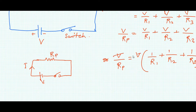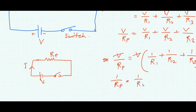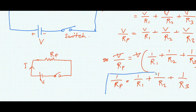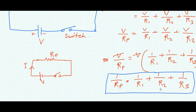V cancels on both sides, so we get: 1/Rp = 1/R1 + 1/R2 + 1/R3. This is the equation for the equivalent resistance in a parallel circuit for three resistors.